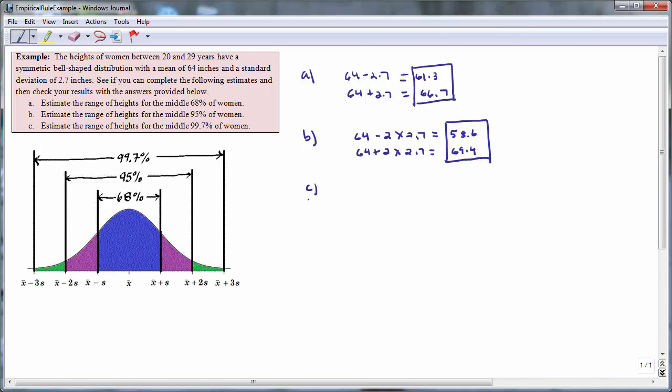we estimate the range of heights for the middle 99.7% of women. So we take the mean of 64 and subtract 3 standard deviations, so 64 minus 3 times 2.7 to obtain 55.9. And then we take 64 plus 3 times 2.7 to obtain 72.1. And we find that the middle 99.7% of women are between 55.9 and 72.1 inches tall.